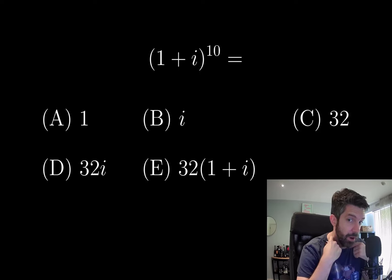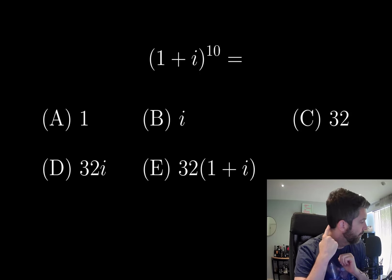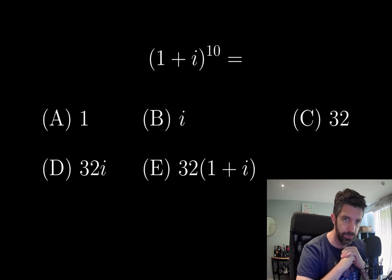And in fact, we can probably also very quickly work out which of options C and D is correct. So 1+i has an argument of π/4, right? It lies at a 45 degree angle between the real and imaginary axis.